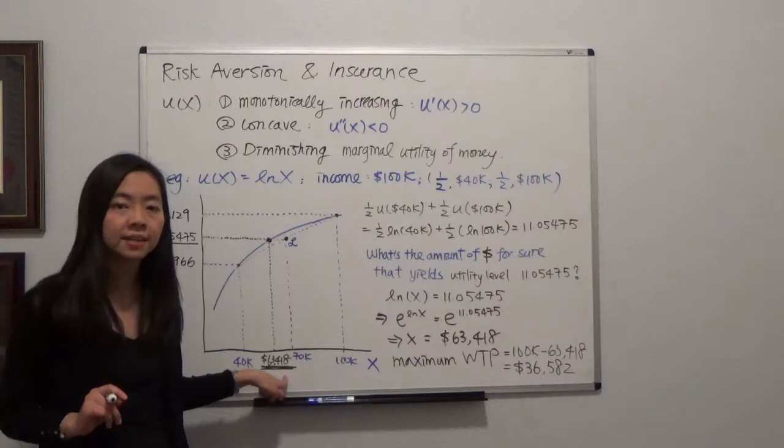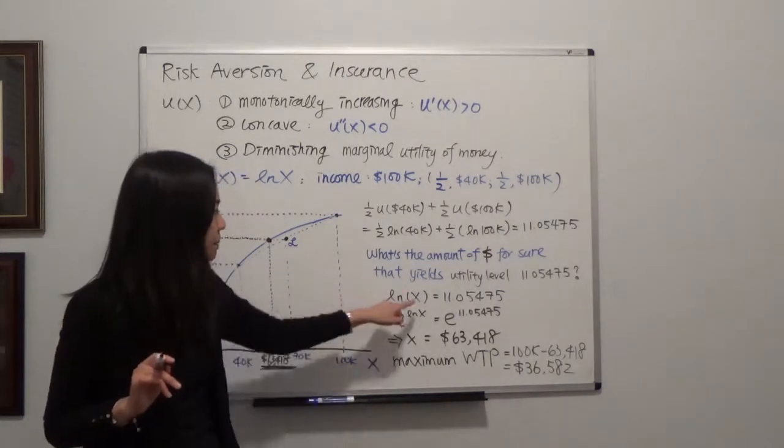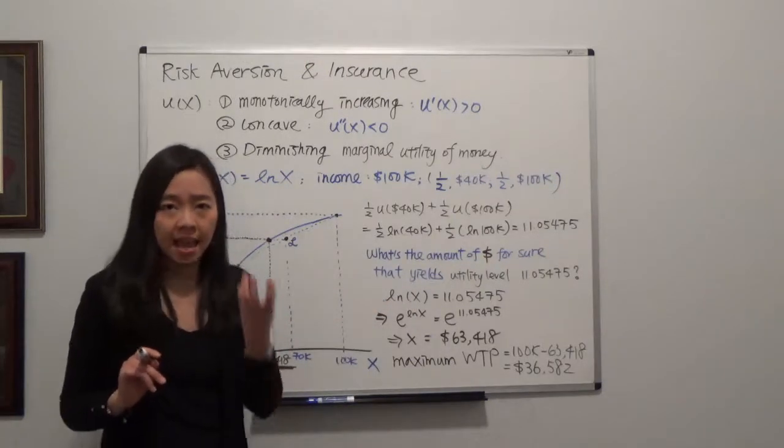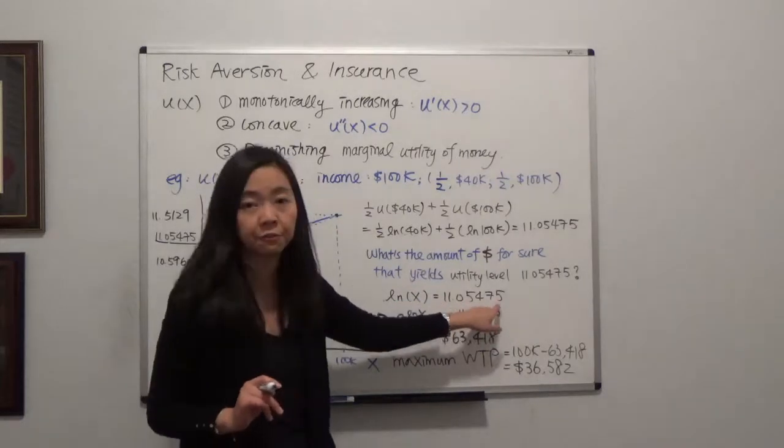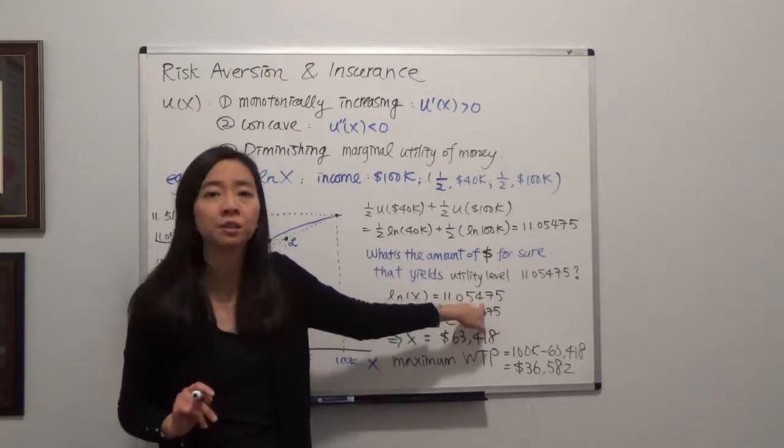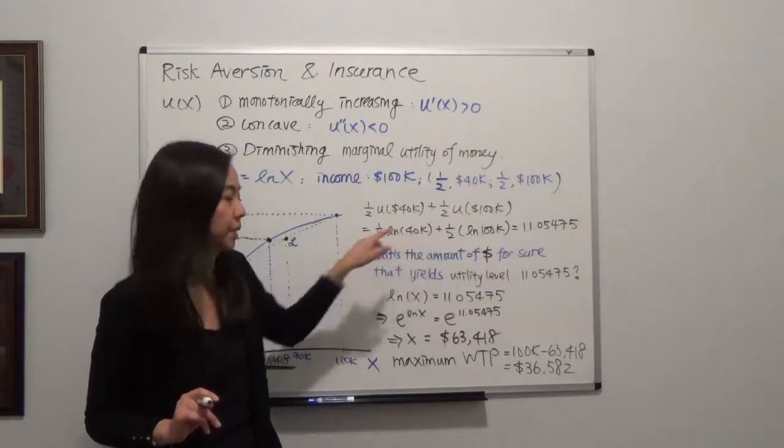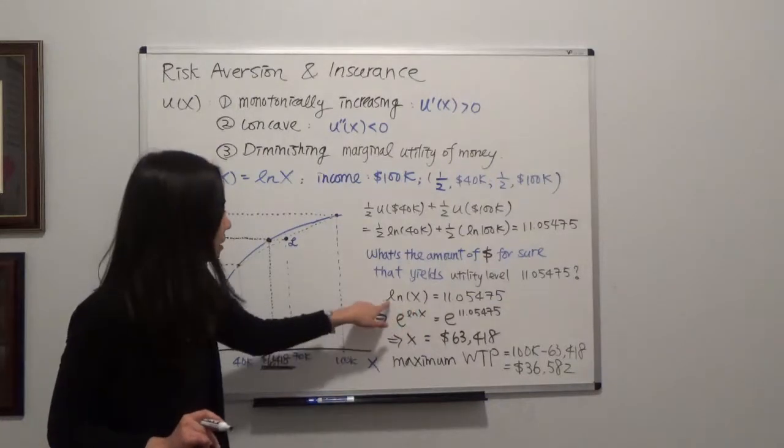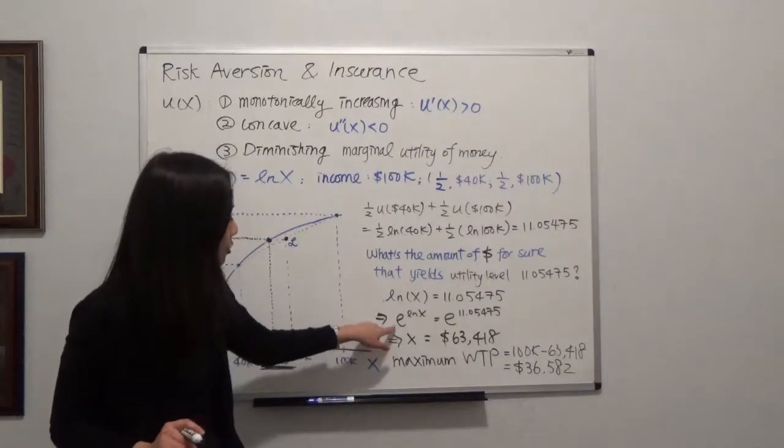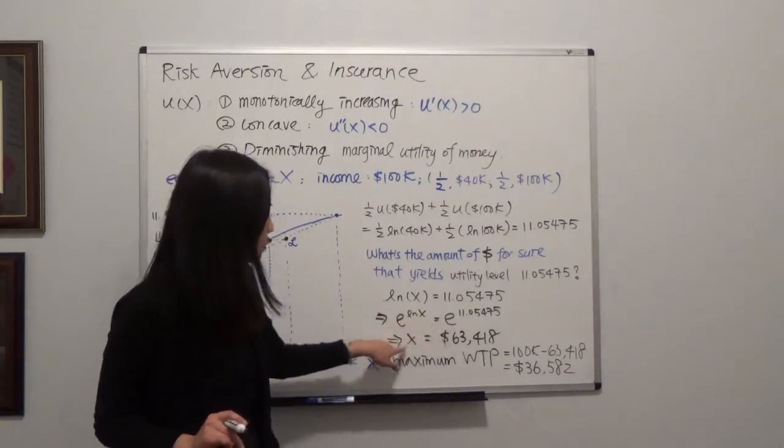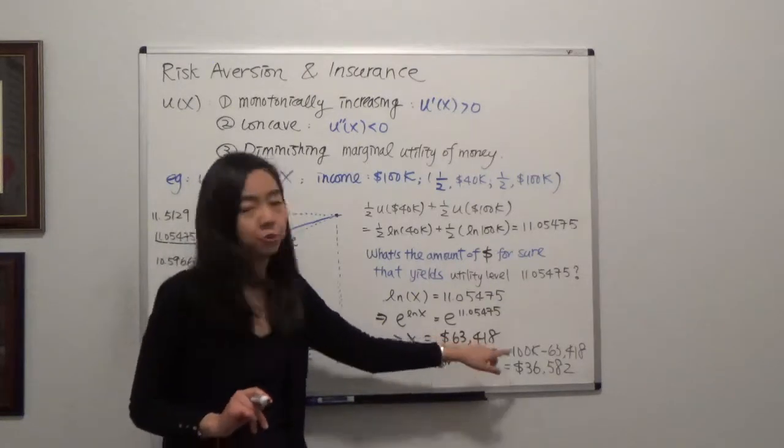So how do I calculate that? That question, putting it mathematically, would be, suppose the amount of money is x. And that amount of money x will give me the utility 11.05475, which is exactly the amount of utility I get from playing that lottery. So we can calculate this, natural log x is equal to 11.05475. And after you solve for x, you'll be able to find that x is exactly equal to $63,418.